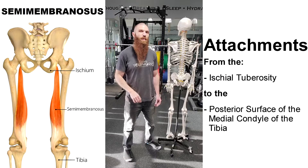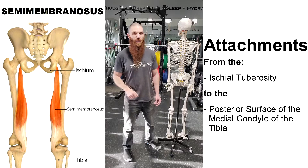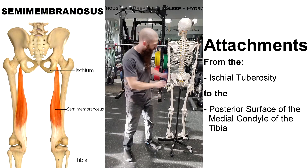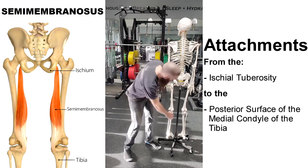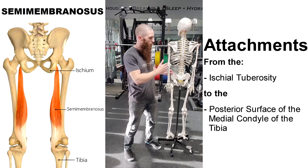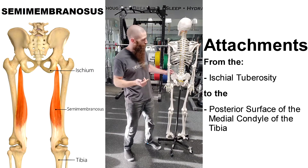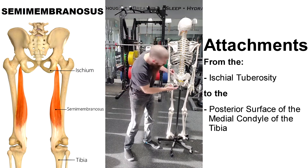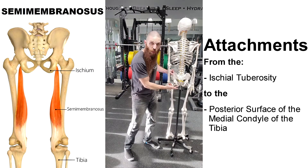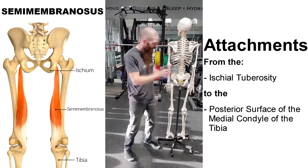For the semimembranosus, there are only two bones we need to cover: the pelvis and the tibia. At the pelvis, this right over here is your ilium, and if we go to the most inferior aspect of the pelvis, we have the ischial tuberosity right over here at the bottom. And that's it in terms of the pelvis.